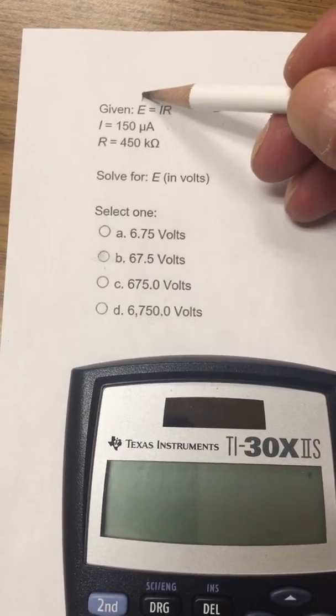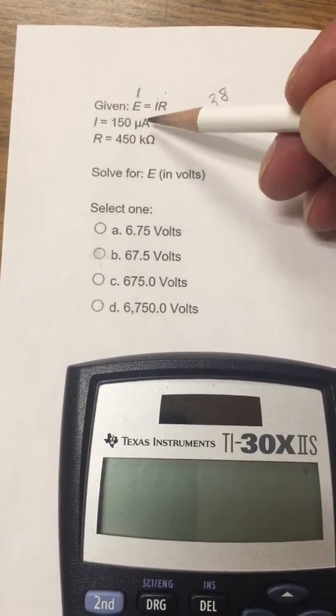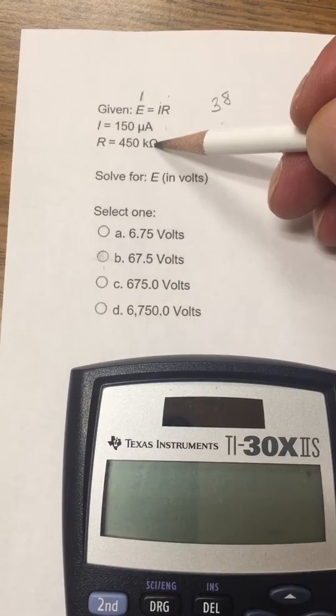And what they're looking for is E, which is volts, and that's going to be I times R, where I is current and R is resistance.